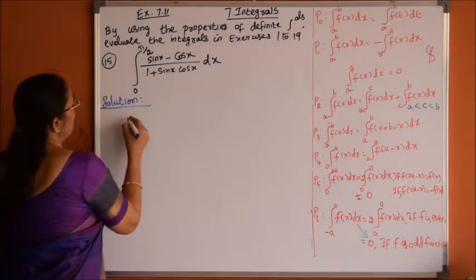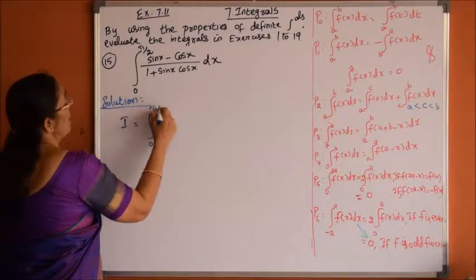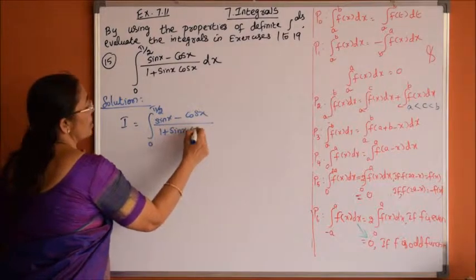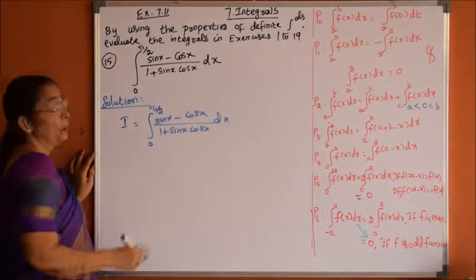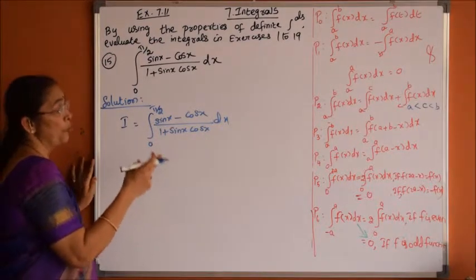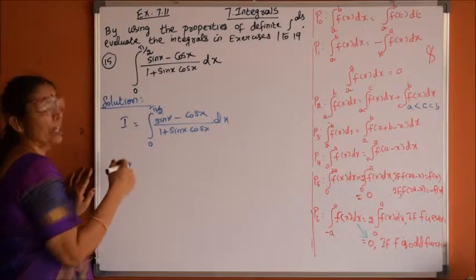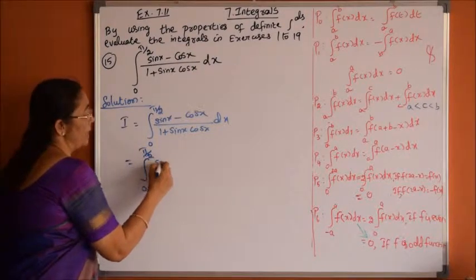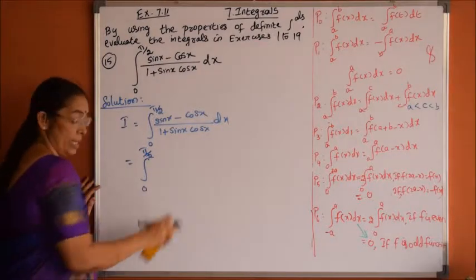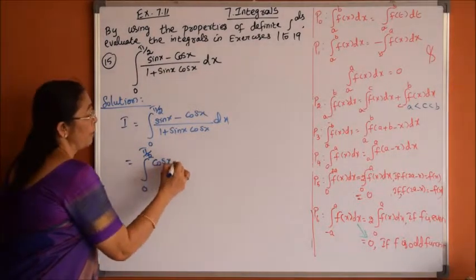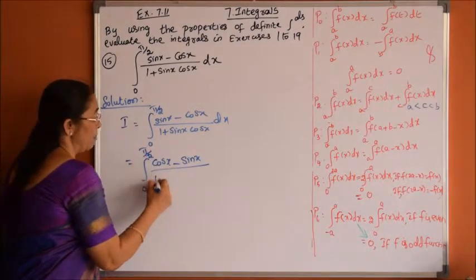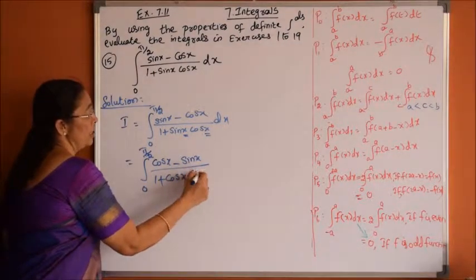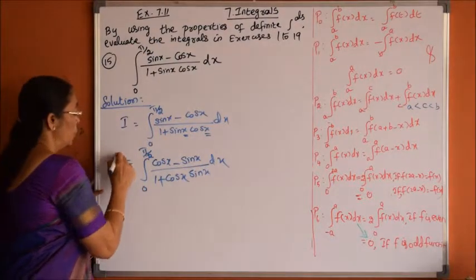Problem 15: Let I equal the integral from 0 to pi by 2 of (sin x minus cos x) divided by (1 plus sin x into cos x) dx. Using property 4, the integral from 0 to a of f of x dx equals the integral from 0 to a of f of a minus x dx. So we write the integral from 0 to pi by 2, replacing x with pi by 2 minus x: sin of pi by 2 minus x is cos x, cos of pi by 2 minus x is sin x, giving (cos x minus sin x) divided by (1 plus cos x into sin x) dx.